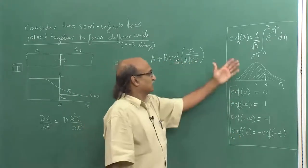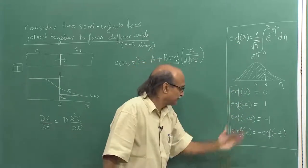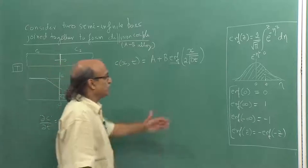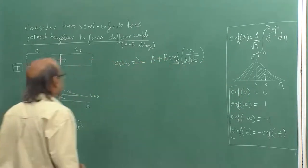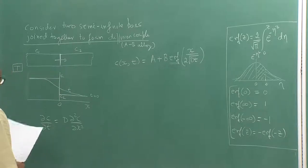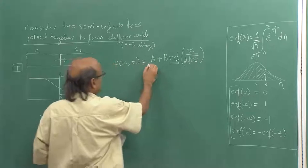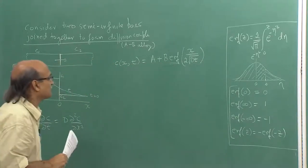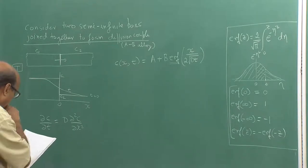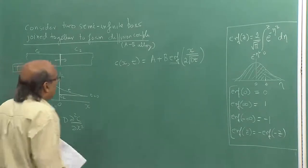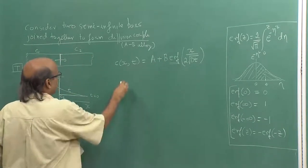Values of the error function at other z values — for that we will make use of a table of error functions a little later. Now coming back to the solution: C(x,t) = A + B · erf(x / 2√(Dt)). We need to find the constants A and B, so let us apply the boundary conditions.